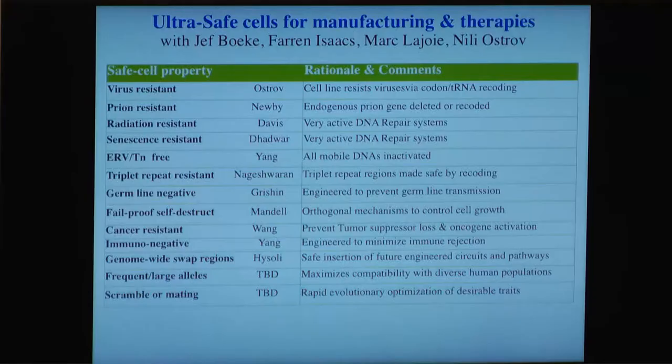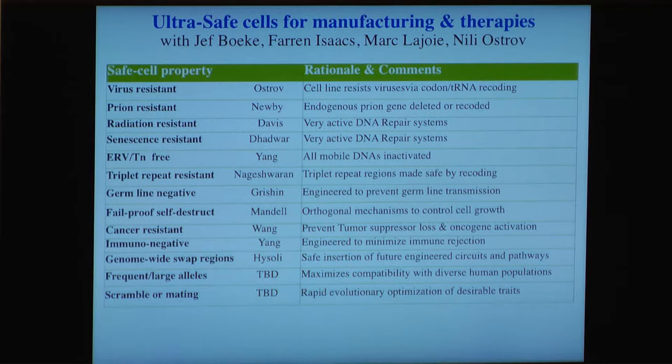This particular pilot project is on so-called ultra-safe cells for manufacturing and therapies. These could be any mammalian cells, since those are used for making protein pharmaceuticals and vaccines. Probably it'll be human cells so we can also use them for stem cell therapies and transplants. We want them to be virus resistant, prion resistant, radiation resistant, and senescence resistant — we're just getting warmed up. Endogenous retroviruses — Luhan Yang will talk about that later in this meeting.